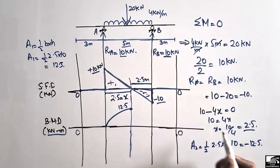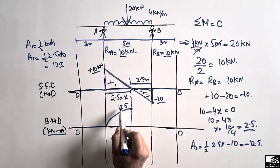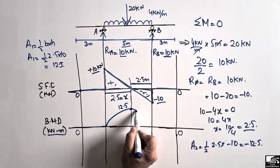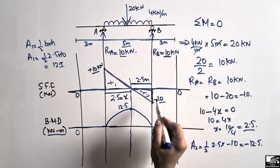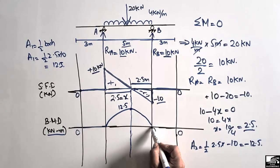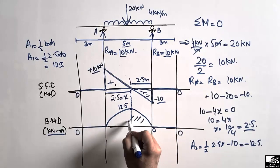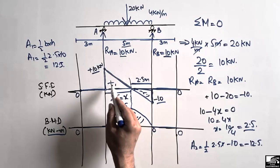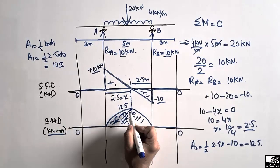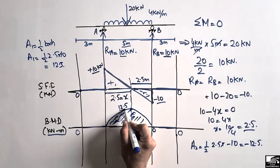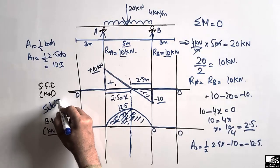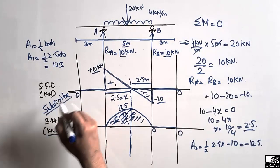Adding +12.5 and −12.5 gives zero, so the bending moment returns to zero at support B and the diagram closes. This completes the bending moment diagram with a maximum positive bending moment of 12.5 kN·m at mid-span of the loaded portion. I hope you understand how to draw the shear force and bending moment diagram. Please subscribe to our channel for more AC1 Engineering videos.